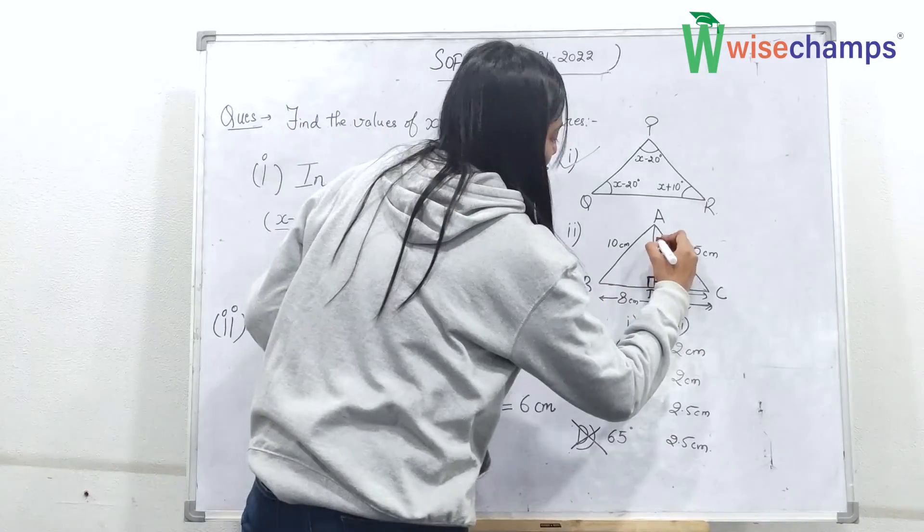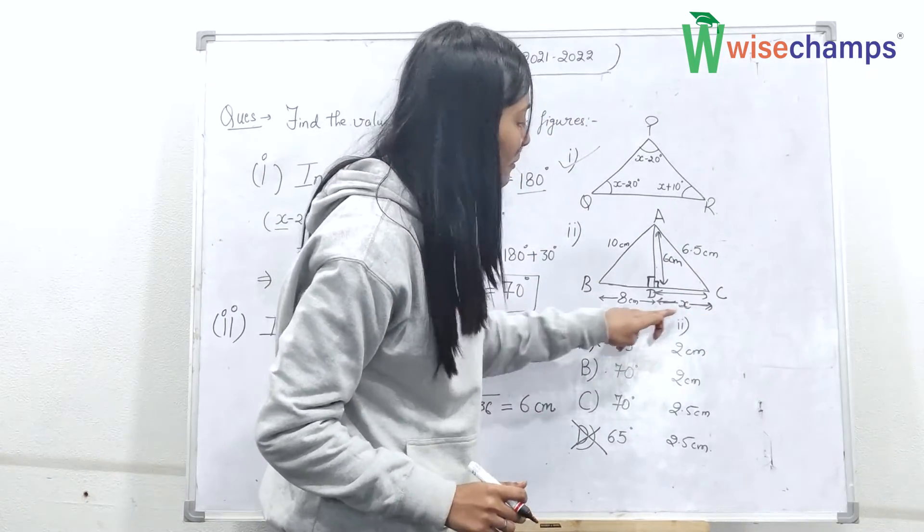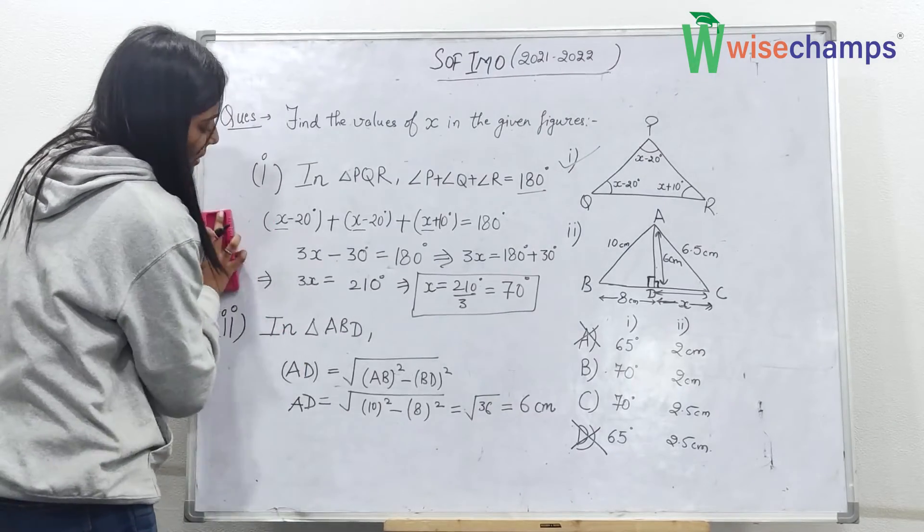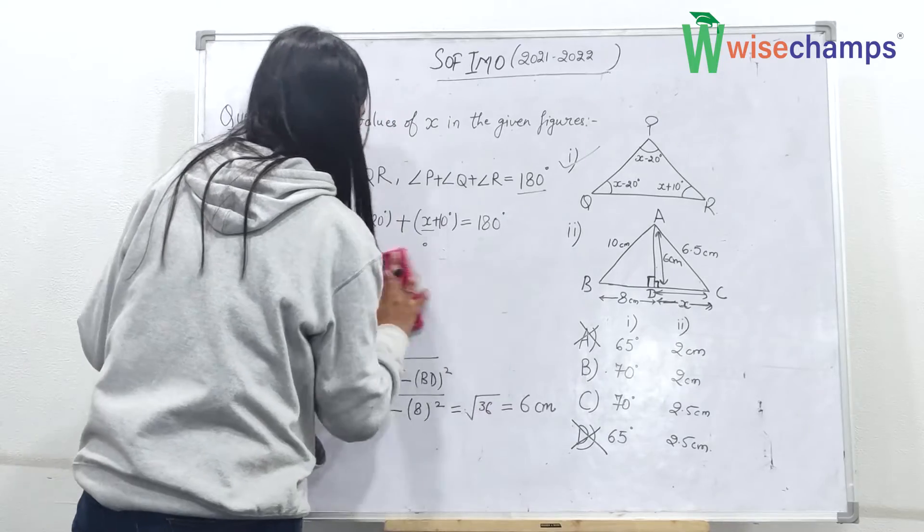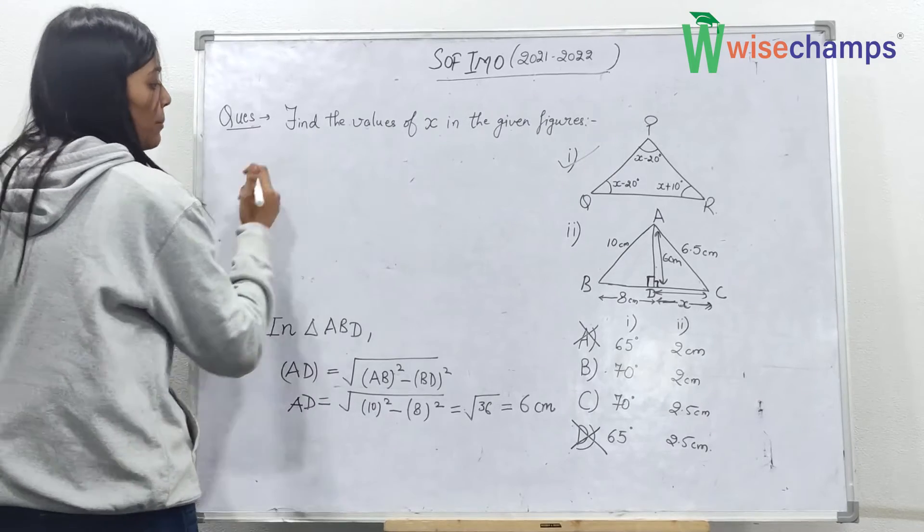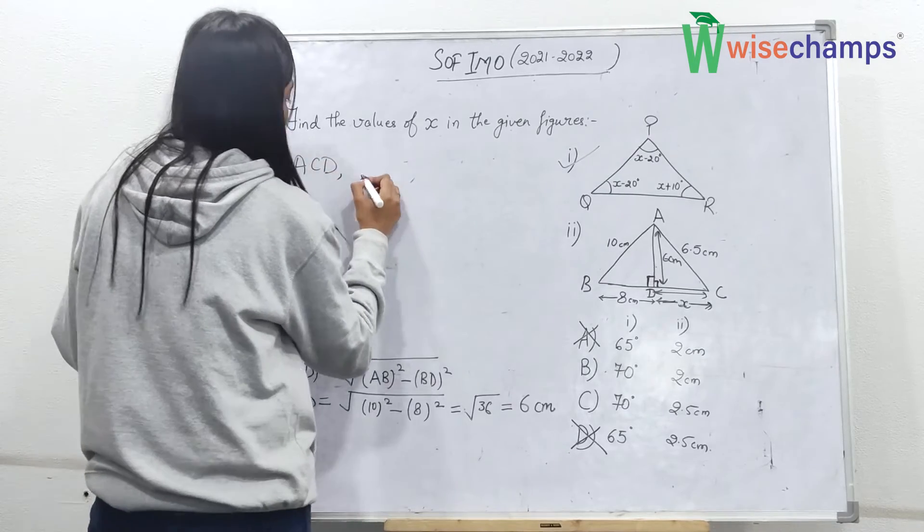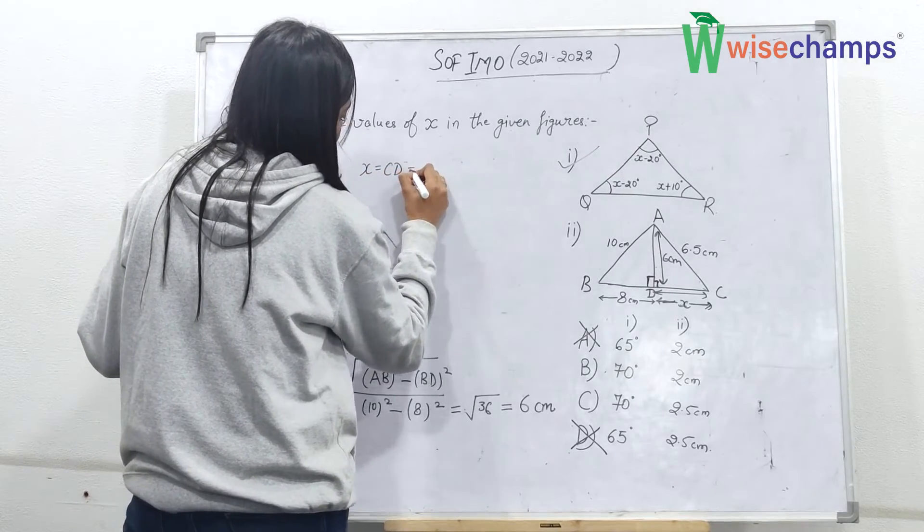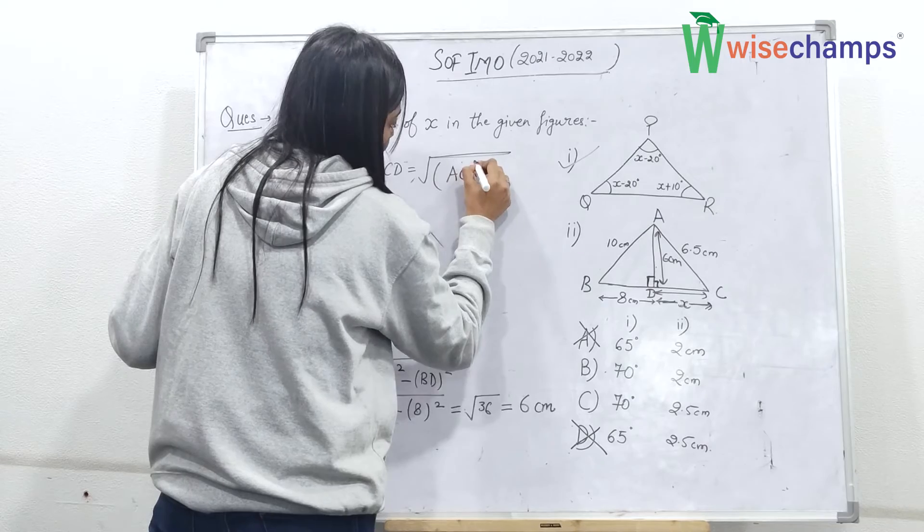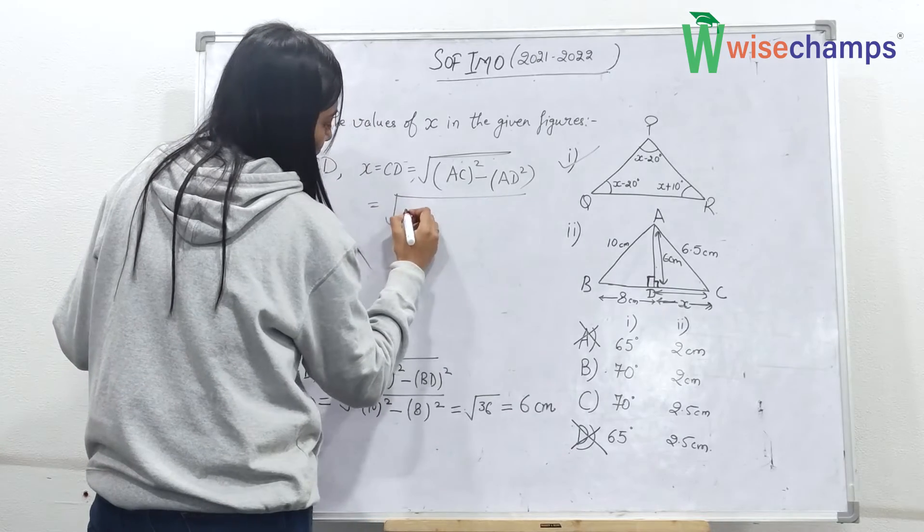So now you have the value of this side, 6 centimeters. So it is easy now to find out the value of X in a similar manner. So again in the second figure, in triangle ACD, you need to apply Pythagoras again. So you will get X equal to CD equals root AC square minus AD square.